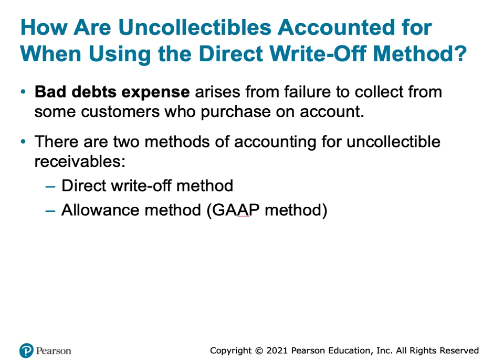Customers' accounts receivables that are uncollectible must be written off or removed from the books because the company does not expect to receive that cash in the future. Instead, we need to record an expense associated with the cost of the uncollectible account. Bad debts expense is the cost to the seller of extending credit, and that's an account we're going to use with both methods. We'll look at the actual journal entry associated with it in the coming slides. There are two different methods for accounting for uncollectible receivables.